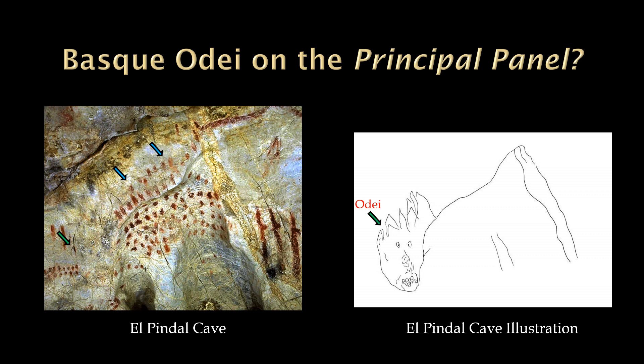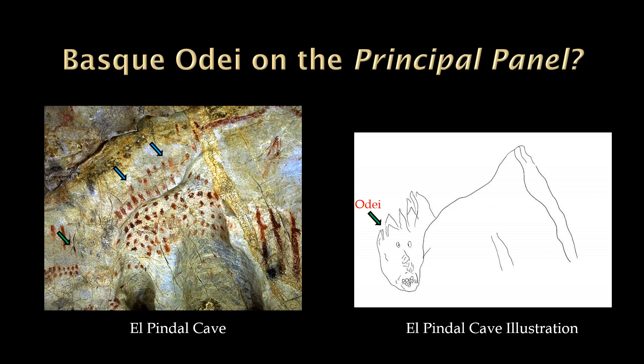This character has the impression of the wind. I believe that this character is a representation of the Basque Odi, who is the spirit of thunder and the personification of storm clouds. If one slowly whispers the name Odi, the sound has some resemblance to the wind. Odi is an agent of the Basque deity Mari, who dwells in a cave on the mountain Chindoki, which has lines that closely resemble the El Pindal panel. My pronunciation of Basque names are not likely correct, but they're spelled correctly in this presentation.